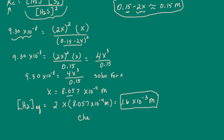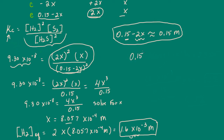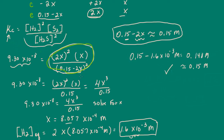I have to check my assumption. We said 0.15 minus 2X is approximately equal to 0.15 molar. Calculating: 0.15 minus 2X, where 2X is 1.6 times 10 to the negative 3 molar, gives us 0.148 molar, which is approximately 0.15 molar. So the assumption was correct. If it hadn't been, we would have needed to keep the 2X in the denominator and solve for X the messier way.